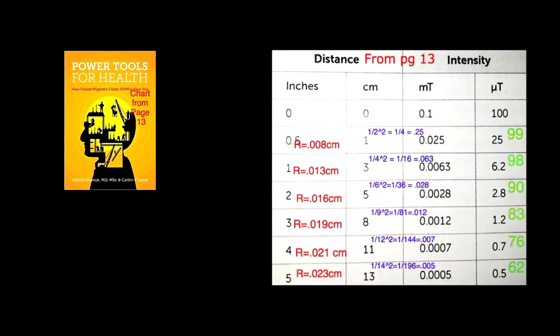I just want to take this chart from page 13 in his book, Power Tools for Your Health, which is a very well-researched book on PEMF, but pages 10 to 15 where he tries to justify high intensity with a 1 over R-squared law. I think we need to look at that.